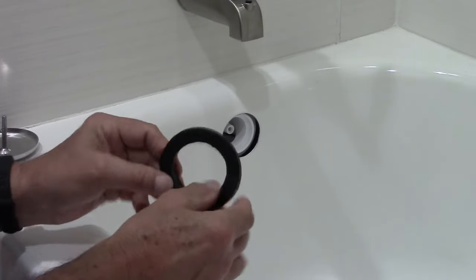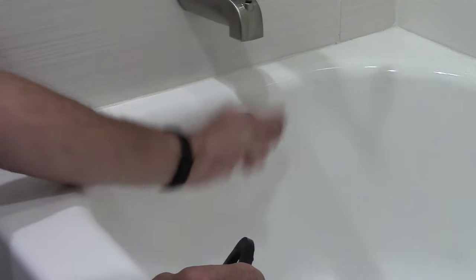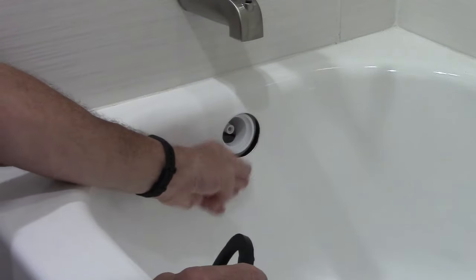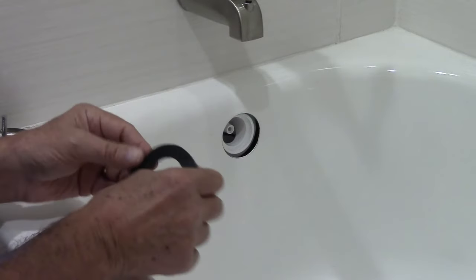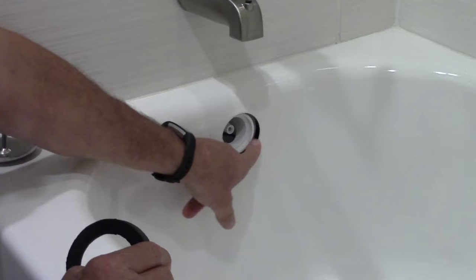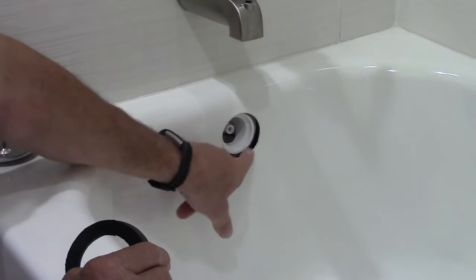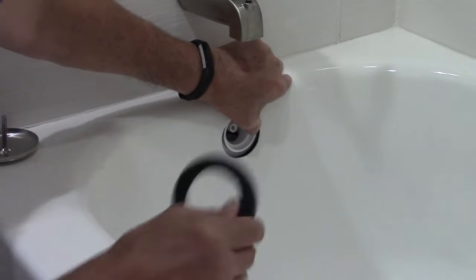Back in the day, most tubs had a slope. This is almost a vertical tub here, a Bootz Maui cast tub. This is a situation where the bevel is going to work in my favor because I have all this space here that I need to fill up with this gasket.